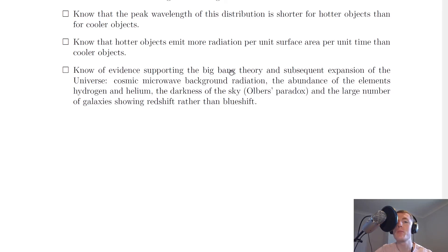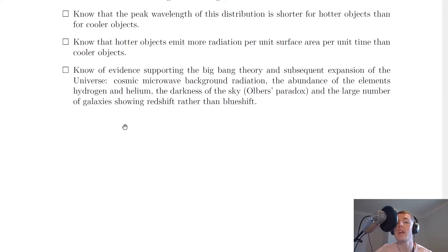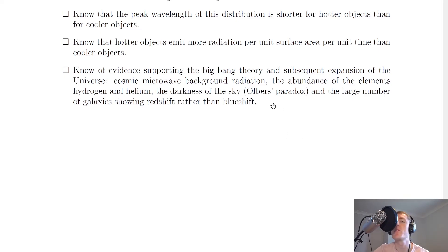The last statement says to know the evidence supporting the Big Bang theory and subsequent expansion of the universe: cosmic microwave background radiation, the abundance of hydrogen and helium, the darkness of the sky known as Olbers' paradox, and the large number of galaxies showing redshift rather than blueshift. Blueshift would be observed for objects moving towards us. You should be able to go into more detail for these types of evidence, and remember Hubble's law is also a piece of evidence even though it's not mentioned here.